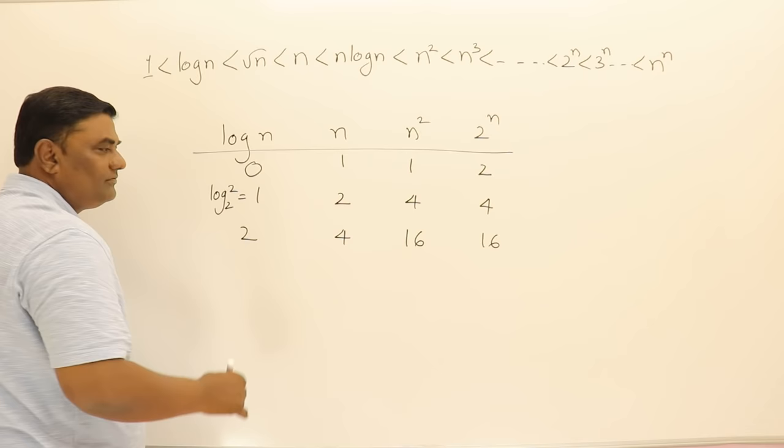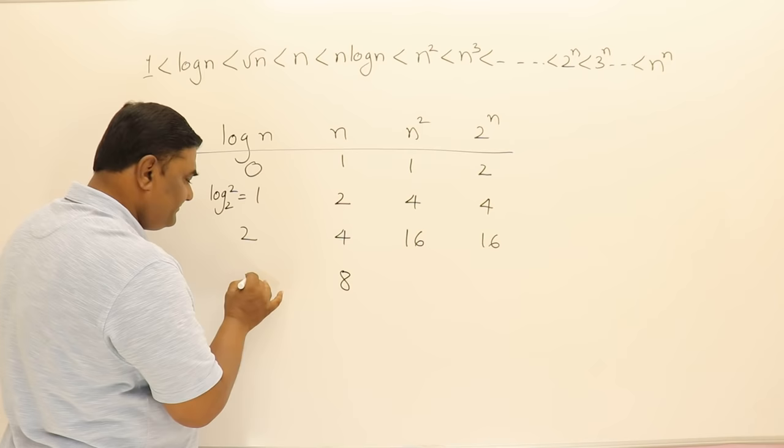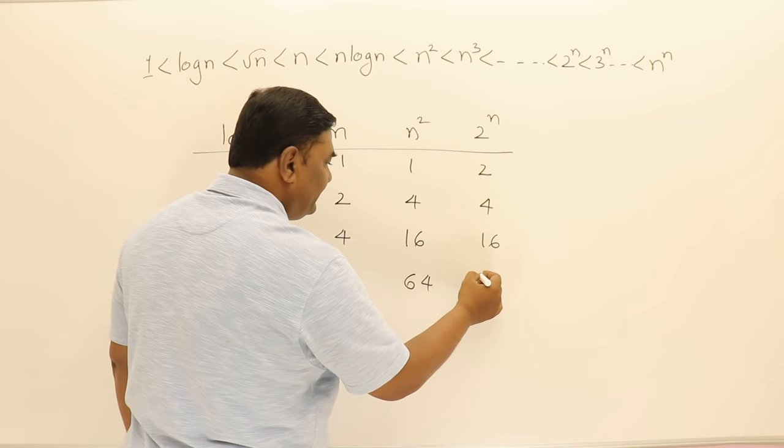If I take n value as 8 this will be 3 and this will be 64 and this is 2 power 8 that is 256. So you can see that there is a sudden change.